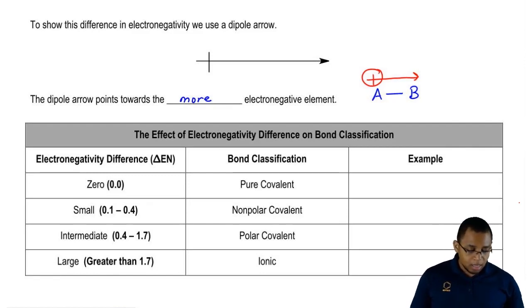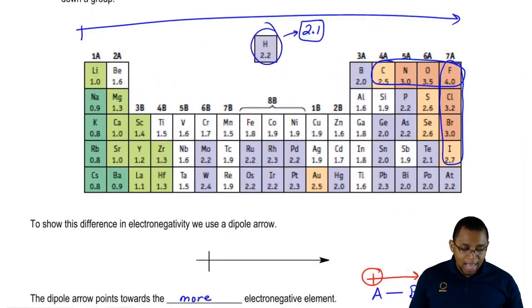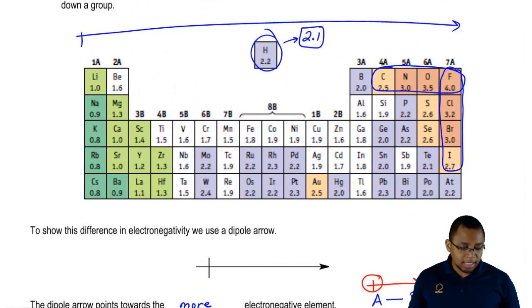If we have a connection between two elements, let's say we have a connection between carbon and hydrogen. Carbon's electronegativity number is 2.5, hydrogen's electronegativity number is 2.2.